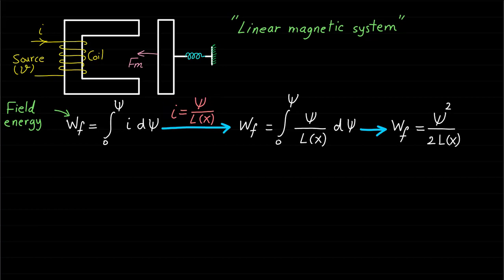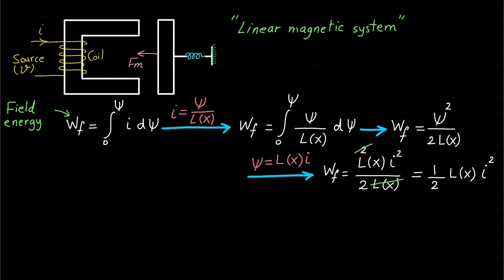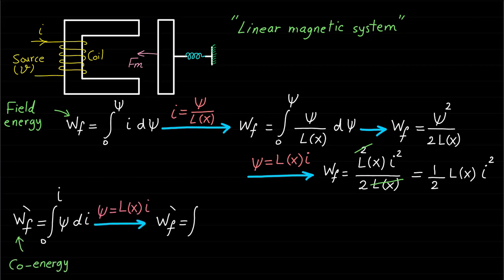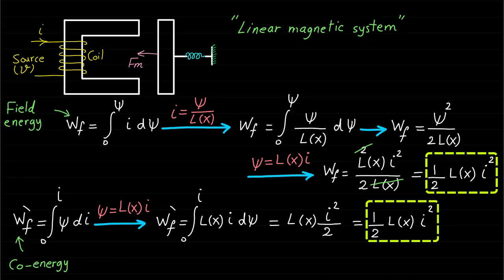The field energy is equal to ½·L(x)·I². Note that the inductance is represented by L(x) because the inductance is a function of the air gap length x, as discussed in the previous lecture. Let's repeat the same mathematical process using the core energy expression. The energy and the core energy are equal and have the same expression when the system is assumed to be a linear magnetic system.